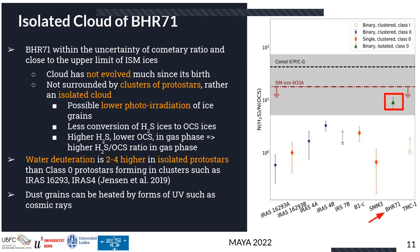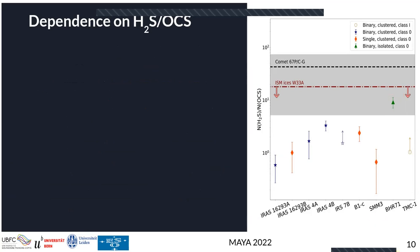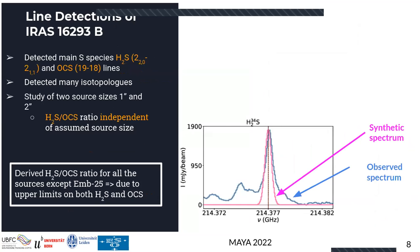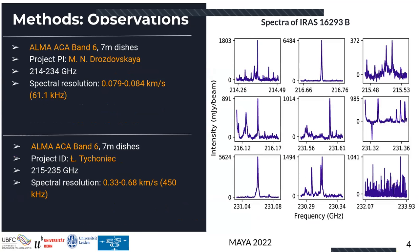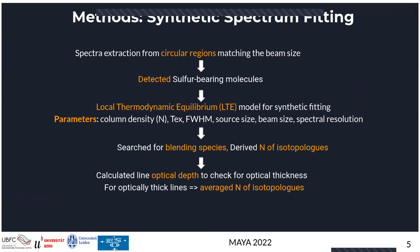Another question: H2S can be optically thick — did you take this into account? Yes. Because H2S and OCS were both optically thick, instead of using their column densities directly, we used their isotopologs and computed the column densities of the main species — H2S and OCS — from the isotopolog column densities, because the isotopologs were optically thin, to avoid this effect.